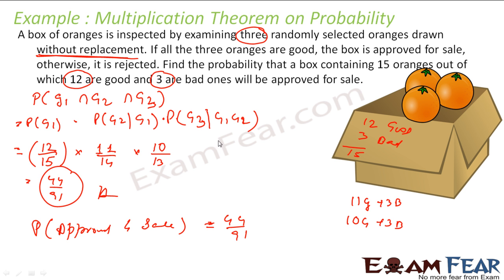If you see, there are only three bad oranges, but almost 50% of the boxes are getting rejected. That is what quality check is — even with only three bad ones, 50% are rejected because of the quality inspection process.